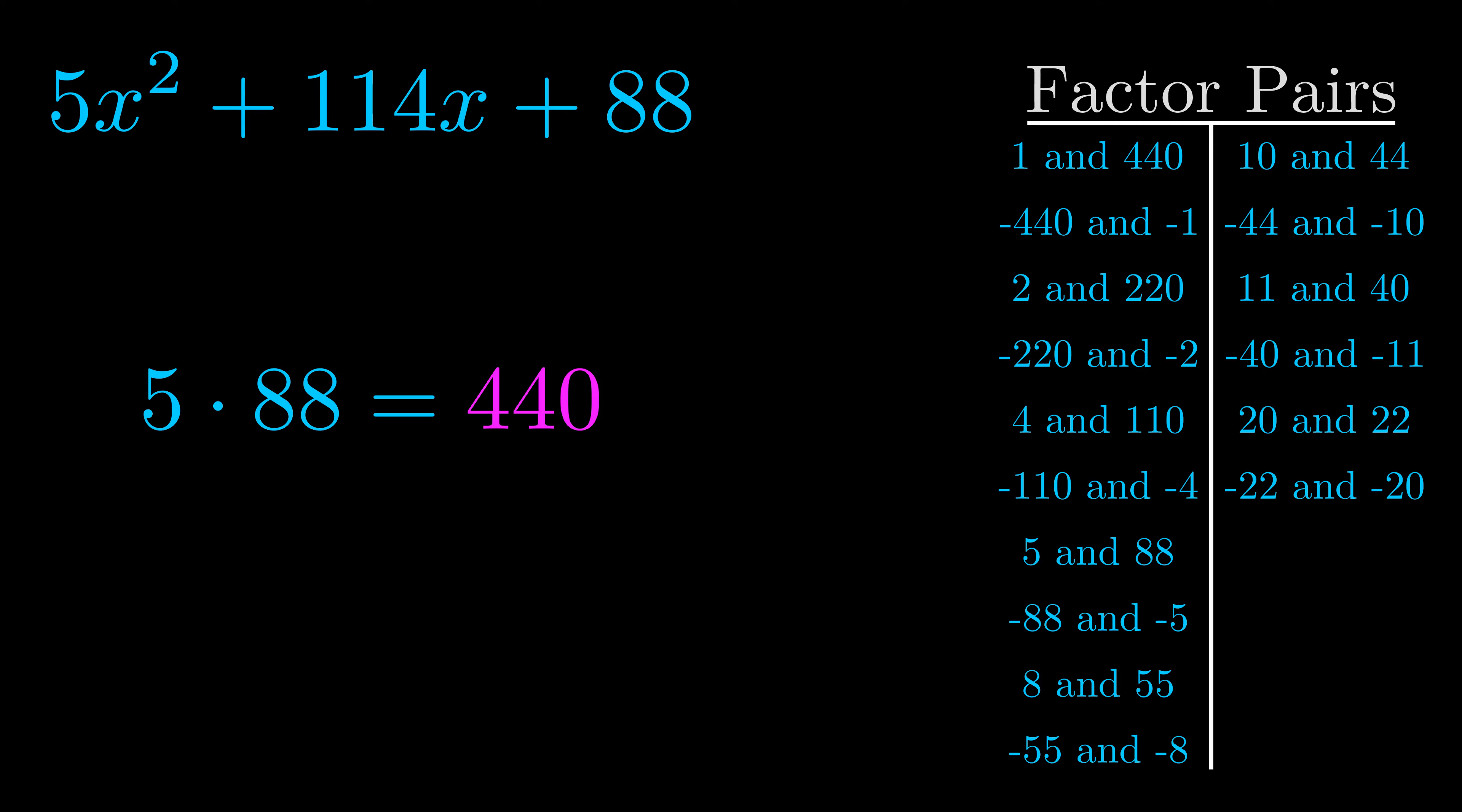The b value is the coefficient on the x term. That's the middle term, the one that we haven't done anything with yet. And really this is the only factor pair that we need.